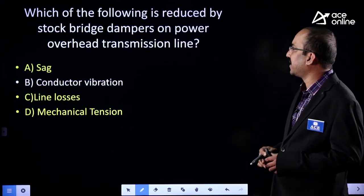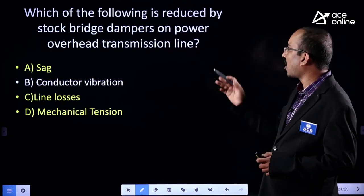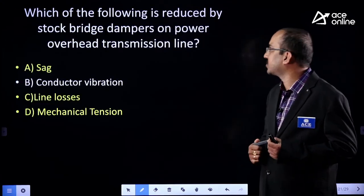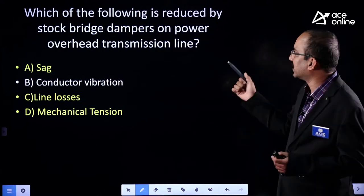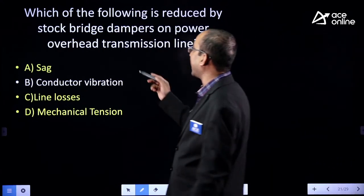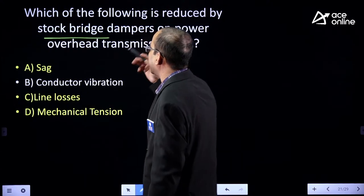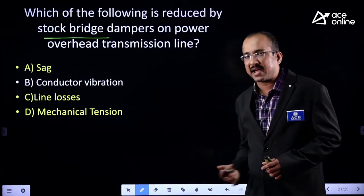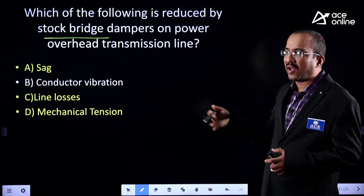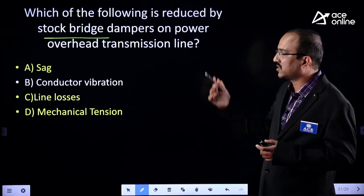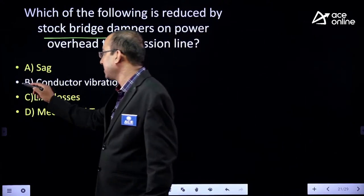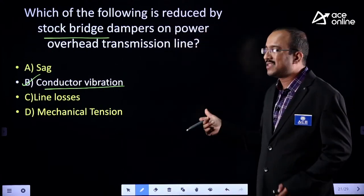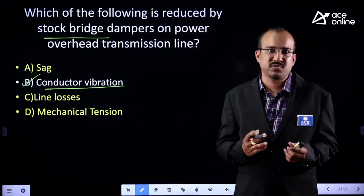Which of the following is reduced by the Stockbridge damper on a power overhead transmission line? The options are SAG, conductor vibration, line losses, and mechanical tension. The Stockbridge damper reduces conductor vibration. These type of short questions will be asked in PSUs.